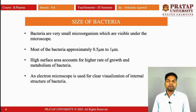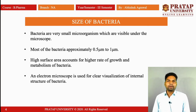Second is the size of the bacteria. Bacteria are very small microorganisms which are visible under the microscope. Most bacteria are approximately 0.5 micrometers to 1 micrometer in size. High surface area accounts for the higher growth and metabolism of bacteria. An electron microscope is used for clear visualization of the internal structure of bacteria because it gives a sharp image.